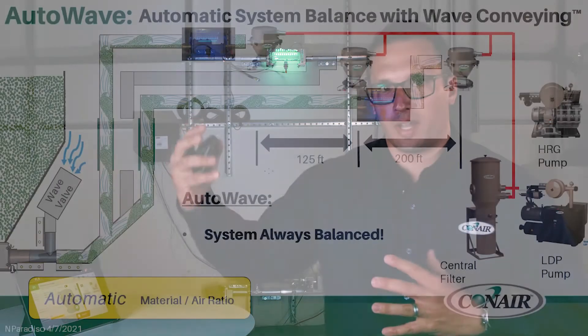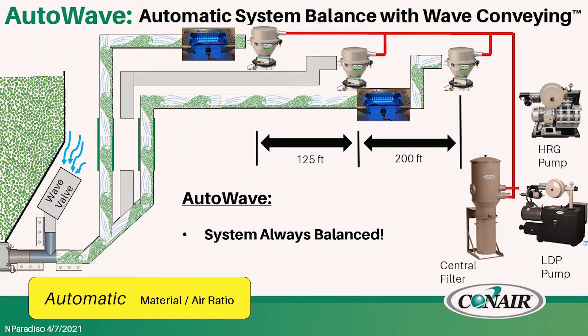To show a quick example of this, it's automatic material to air ratio adjustments. So if you have a receiver and that receiver is hooked up through a manifold or through a common line and then you go to convey to a receiver that's farther away, in this specific case we'll say 325 feet away.